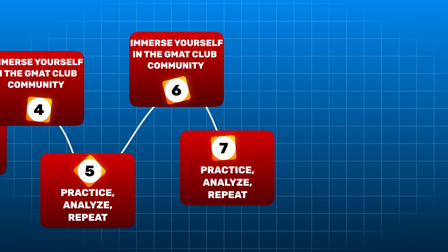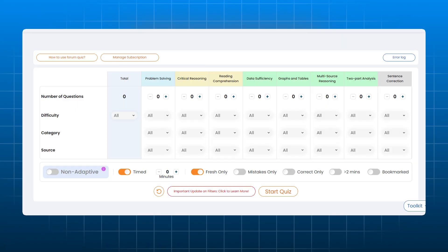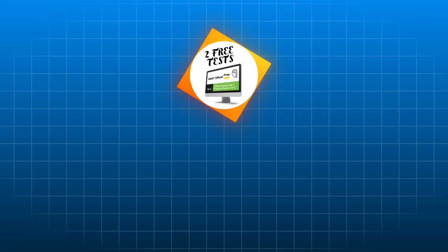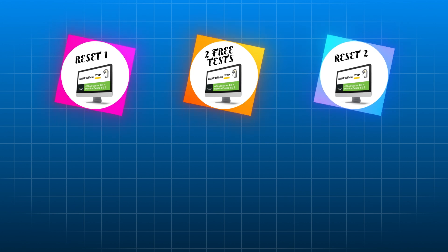Step 7: Practice, analyze, repeat. Now that you've got your plan, it's time to execute. Do daily practice — create a practice test of 3 easy, 4 medium, and 3 hard questions. You can use the GMAT Club forum quiz to practice sectional tests and evaluate your performance. Analyze your mistakes in depth using the error log tool to track your progress, and be accountable and work hard towards your dreams. Make sure to use the MBA.com free tests, which you can reset up to 2 times so you get 6 practice tests in total. If you need more, you can always purchase additional tests.